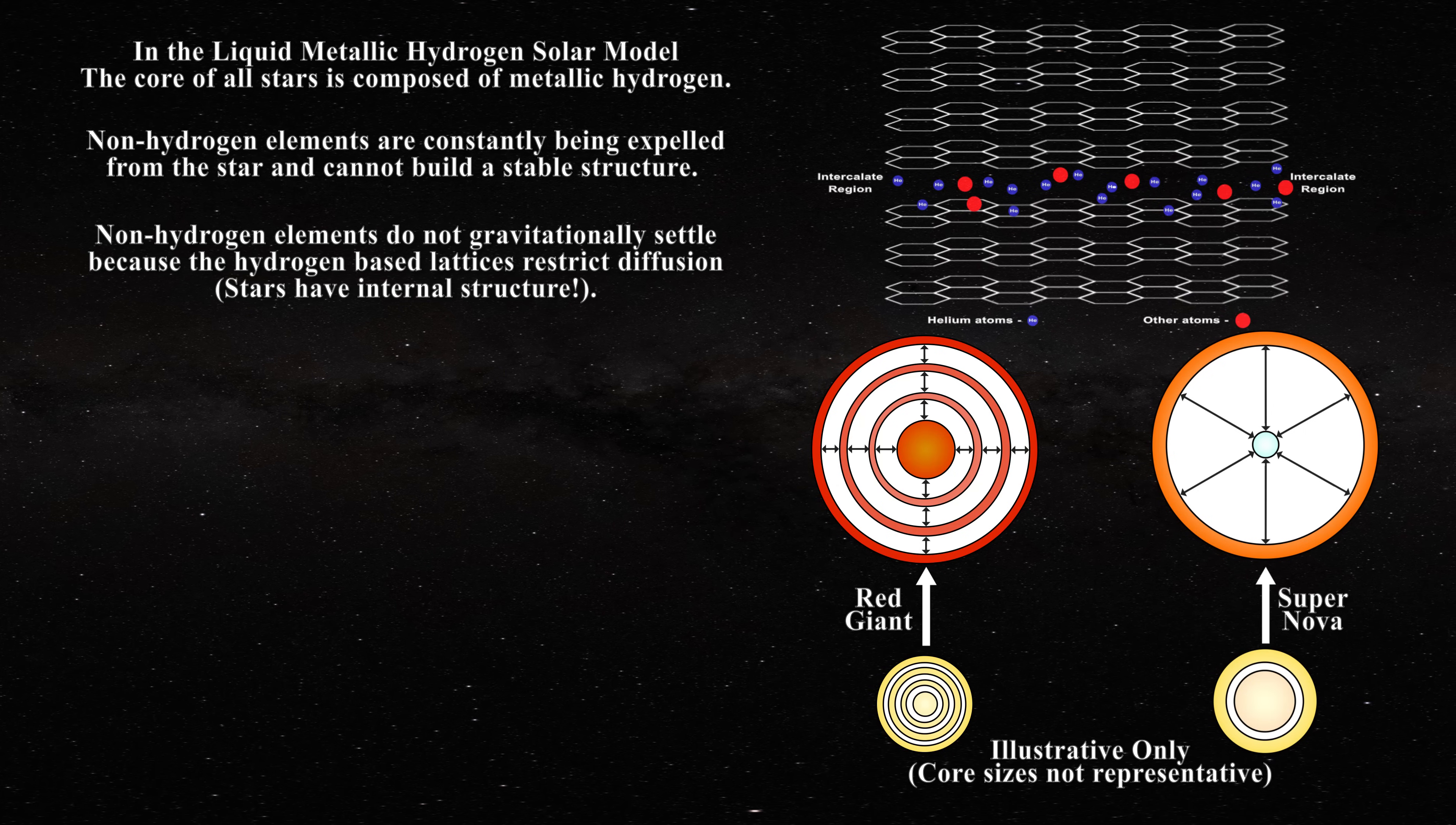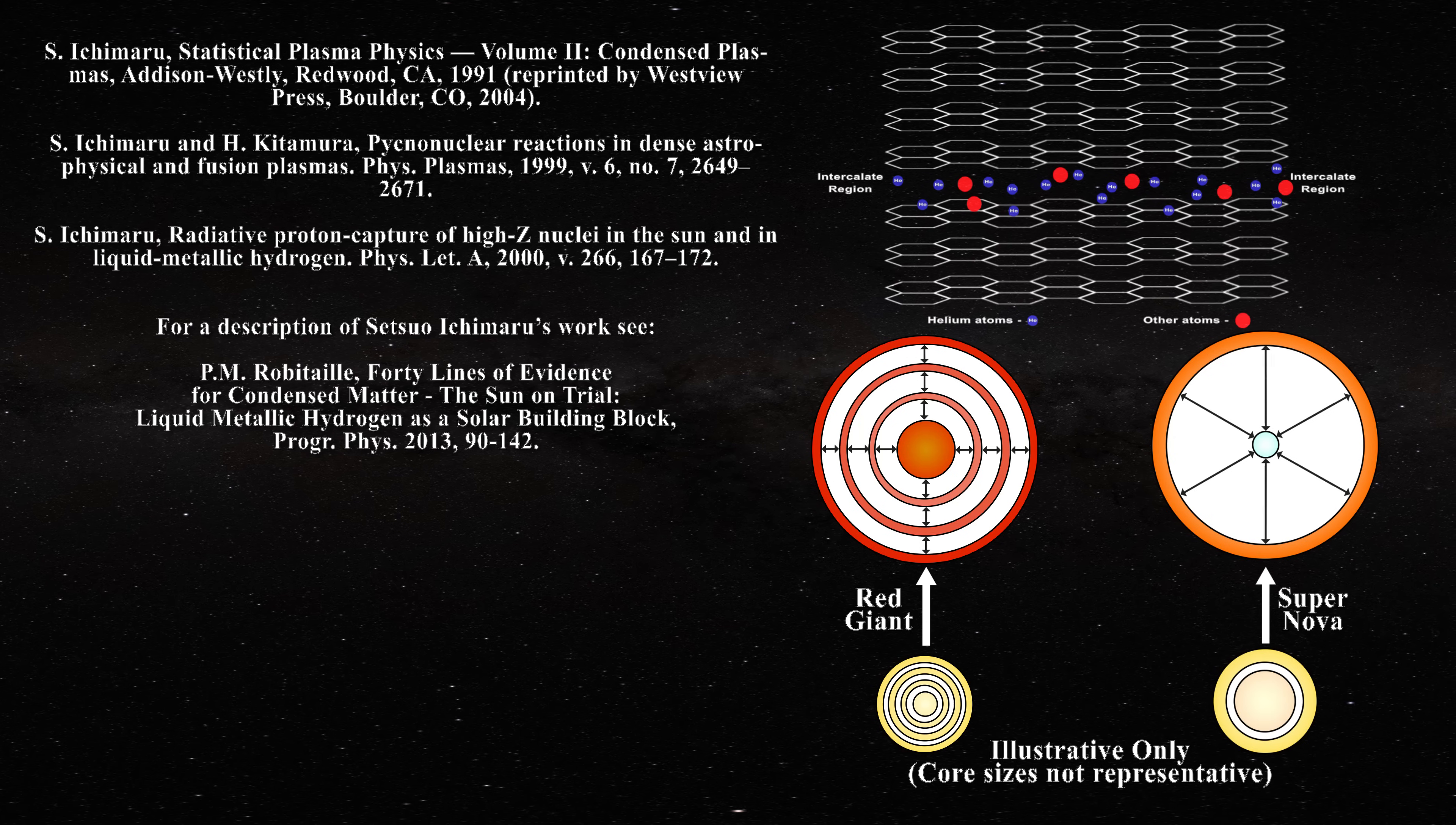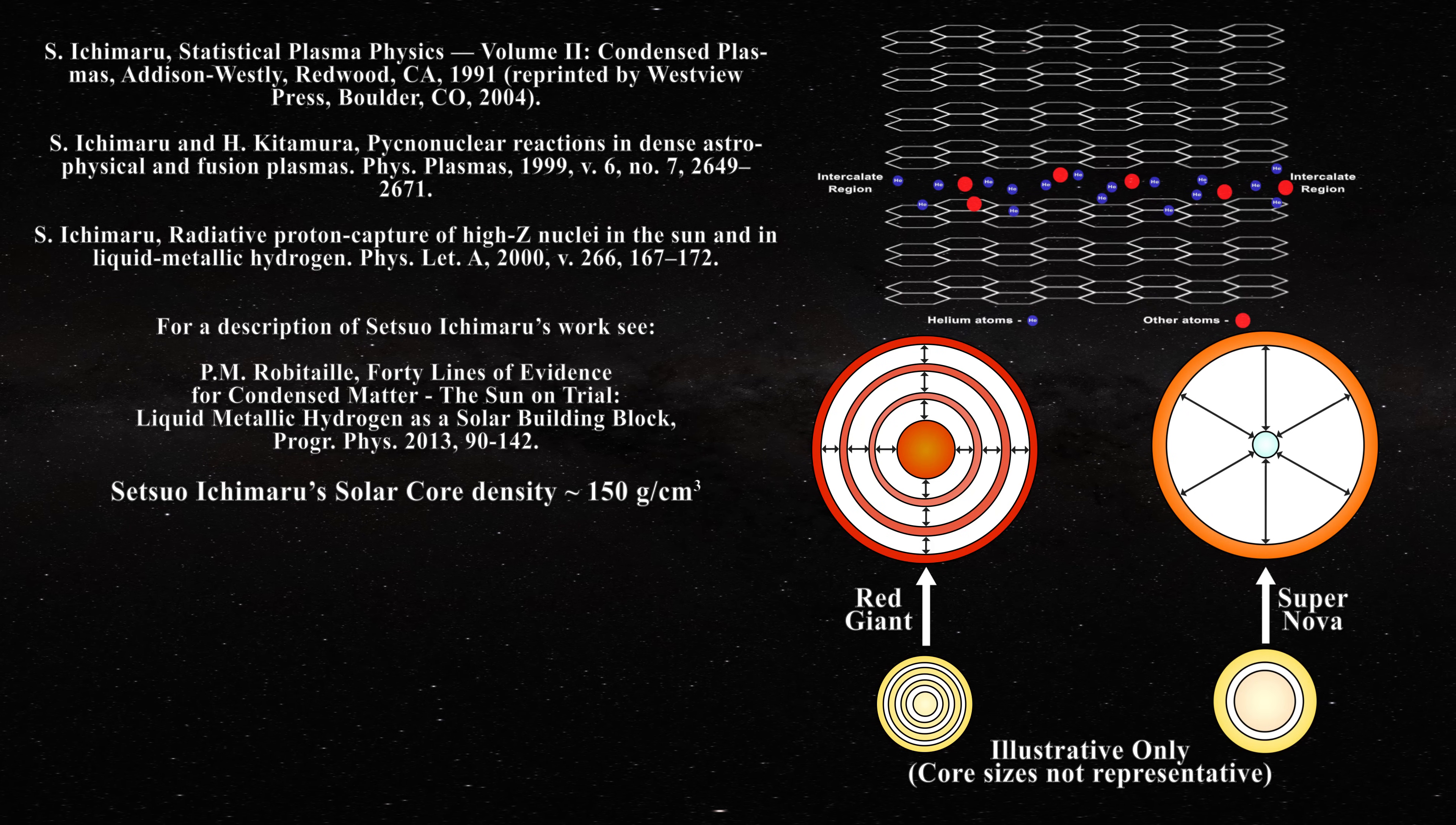Along these lines, Professor Setsuo Ishimaru has proposed that the core of the Sun could be metallic hydrogen in body-centered cubic form. He advanced a density for the core which matched that of the standard model at 150 grams per centimeter cubed. This is a key difference with the liquid metallic hydrogen solar model.